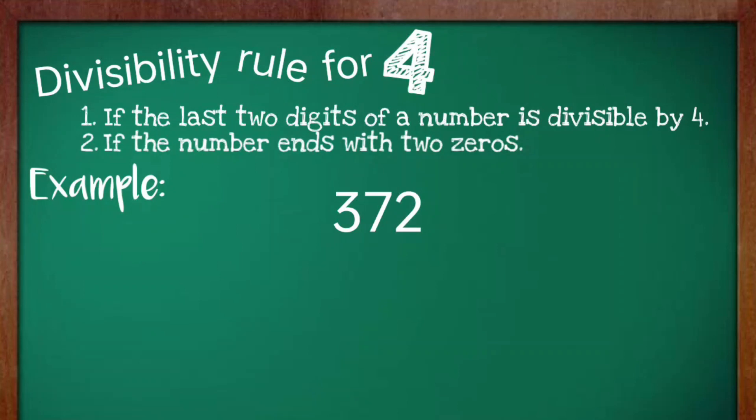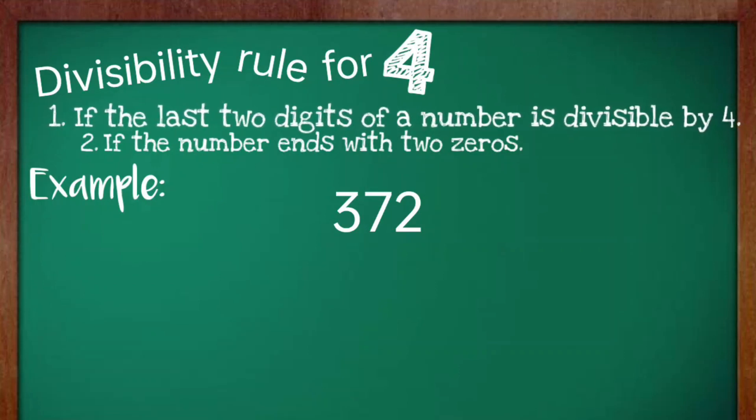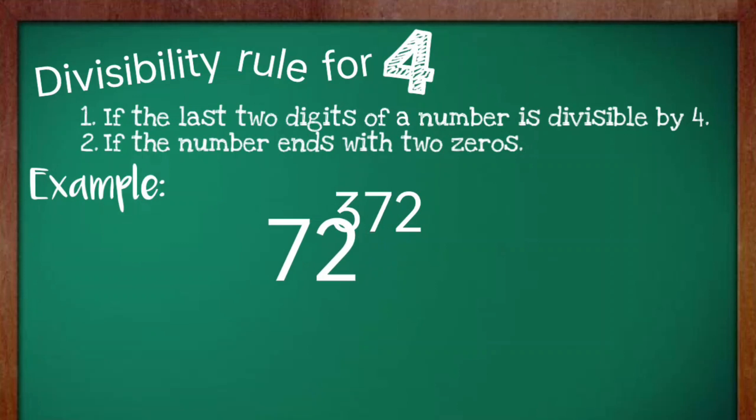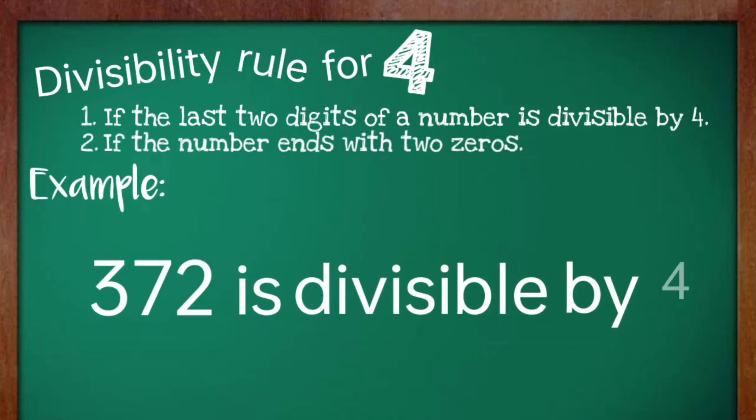Example: 372. To find if this number is divisible by 4, let's apply the first rule. Let's take the last two digits and divide it by 4. 72 divided by 4 is equal to 18. Therefore, 372 is divisible by 4.